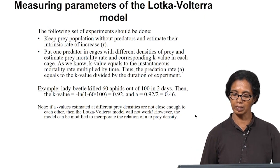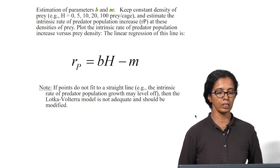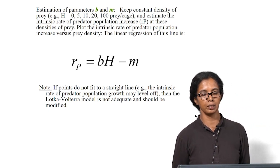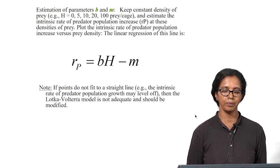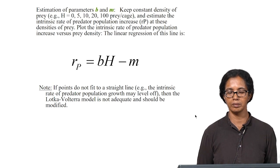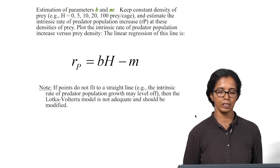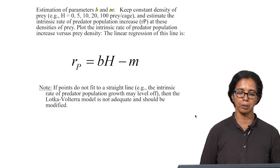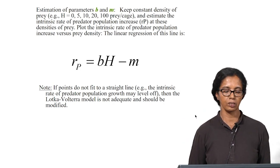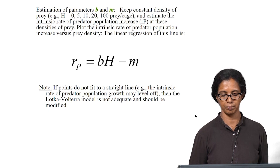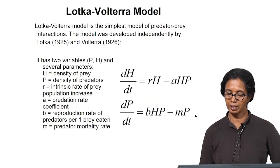Similarly, to determine parameters b and m, keep a constant density of prey — for example h = 0, 5, 10, 20, 100 prey per cage — and estimate the intrinsic rate of predator population increase. Plot the intrinsic rate of predator population increase versus prey density. A linear regression gives rp = bh − m. From this straight-line graph you can get b and m values for use in the Lotka-Volterra model. The first experiment gives r and a, which affect prey population growth; the second gives b and m, which affect predator population growth.